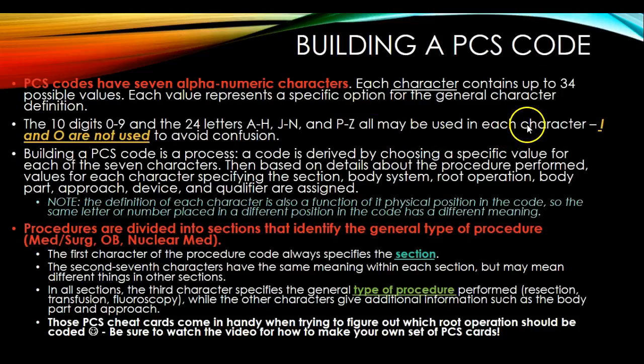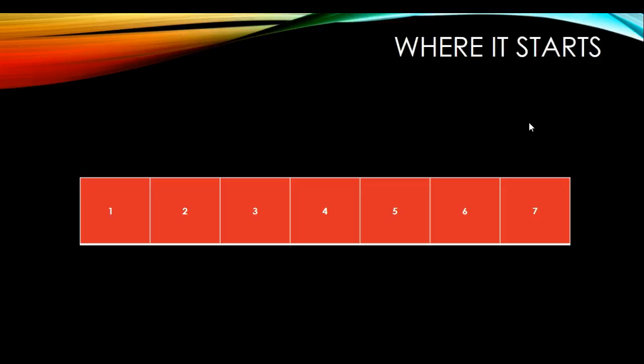Now let's see where it all starts. A PCS code has seven alphanumeric digits, numbered one through seven. Digit number one — which can be a letter or a number, as can all of these — identifies the section.